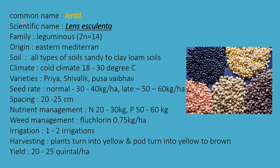The next pulse crop is lentil. Scientific name is Lens esculenta, family Leguminaceae. Chromosome number 2n = 14, origin Eastern Mediterranean. Soil required is all types, with sandy to loamy being best suitable. Climate required is cold, 18 to 30 degrees Celsius.